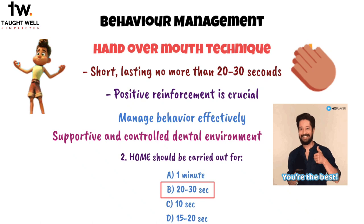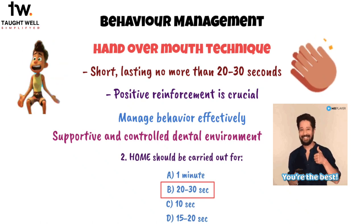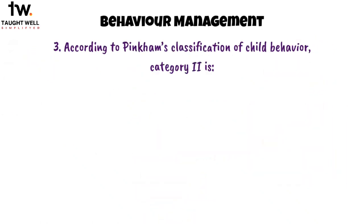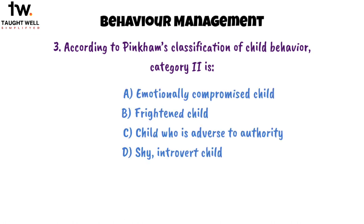Now, the next question. According to Pinkham's classification of child behavior, category 2 is: option A, emotionally compromised child; option B, frightened child; option C, child who is adverse to authority; option D, shy introvert child.